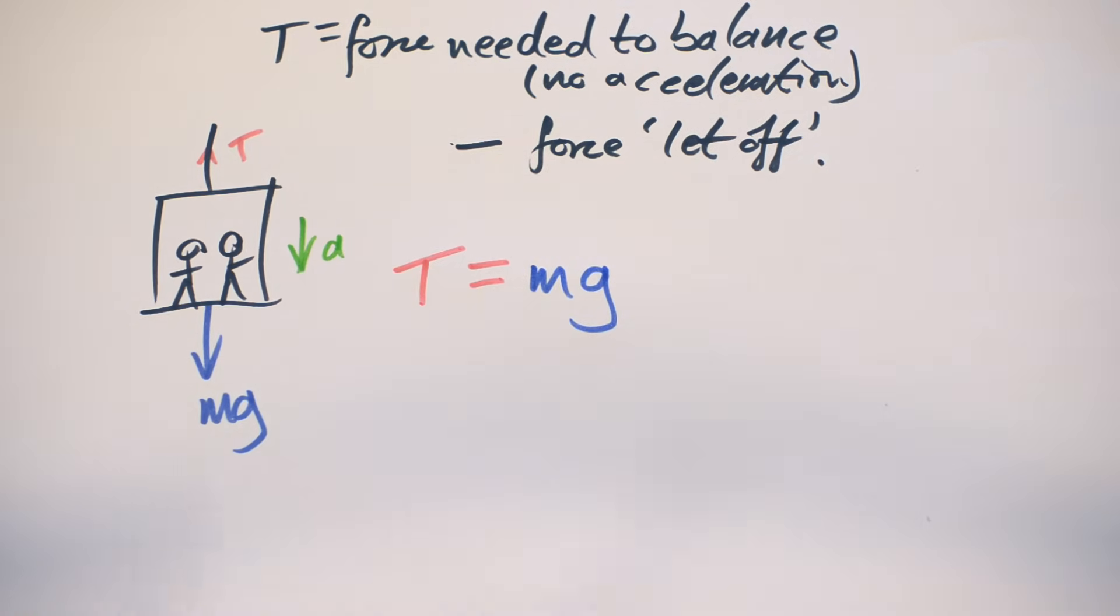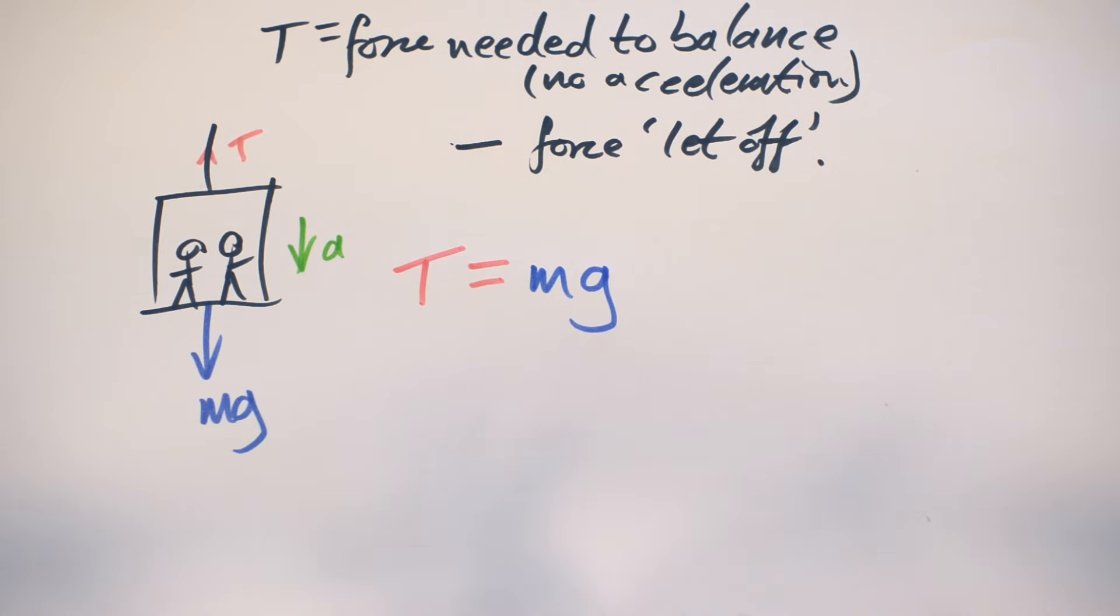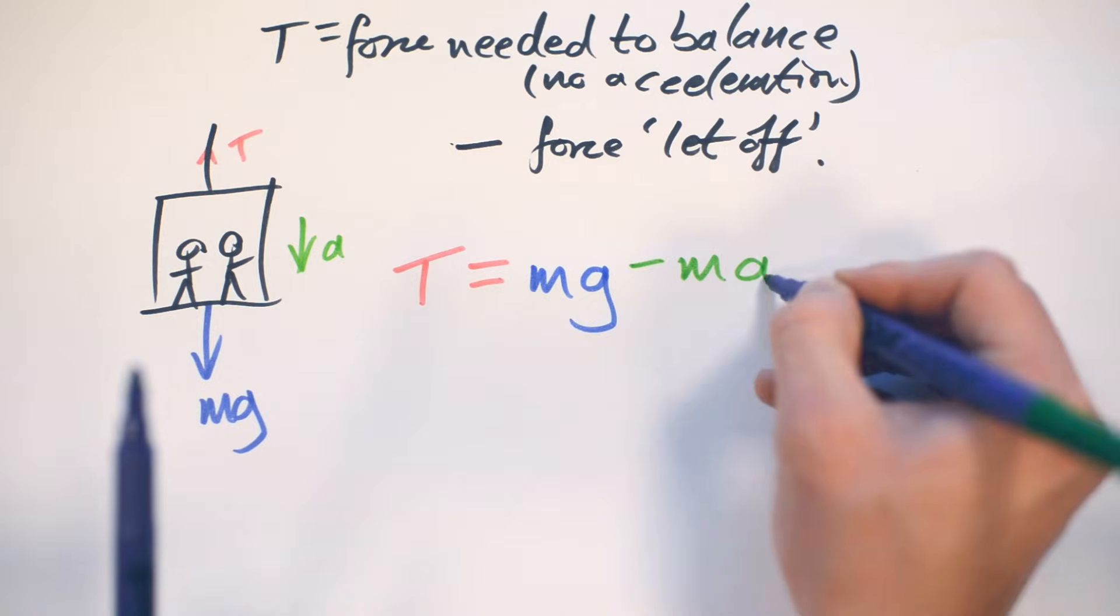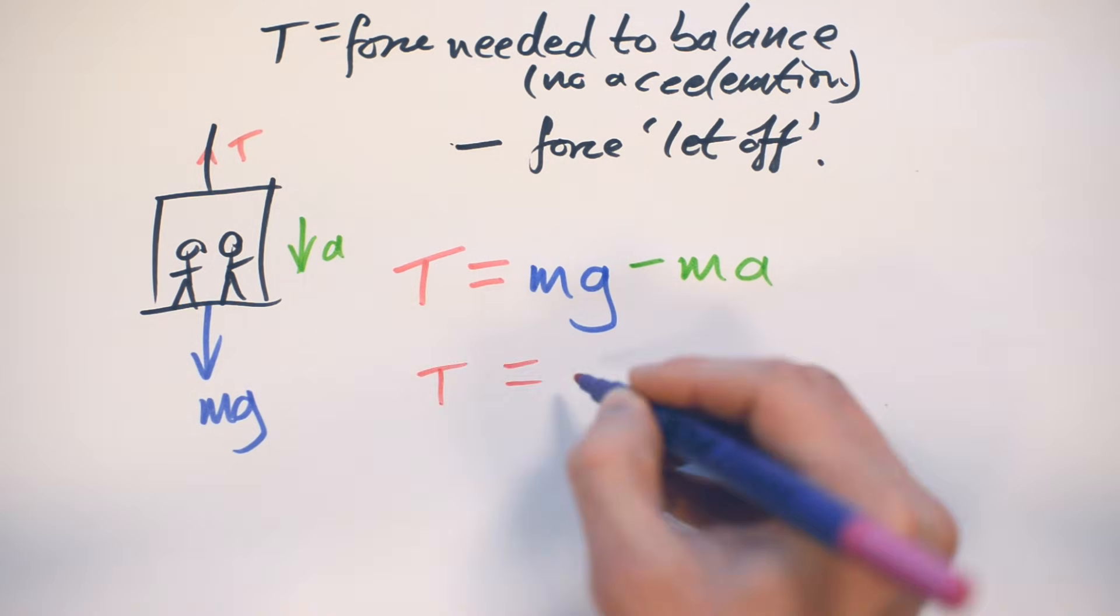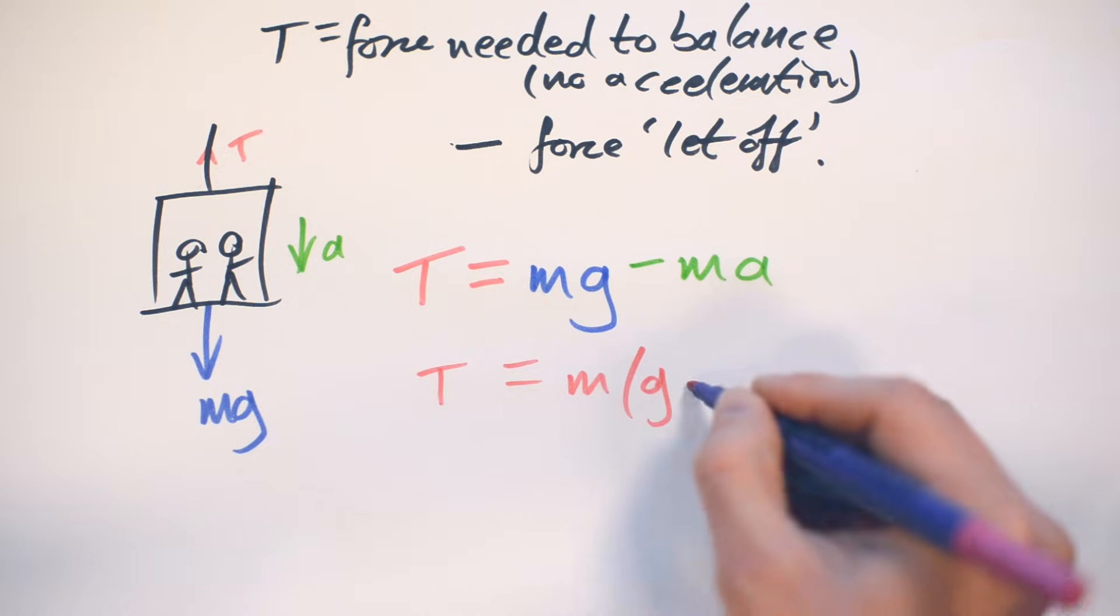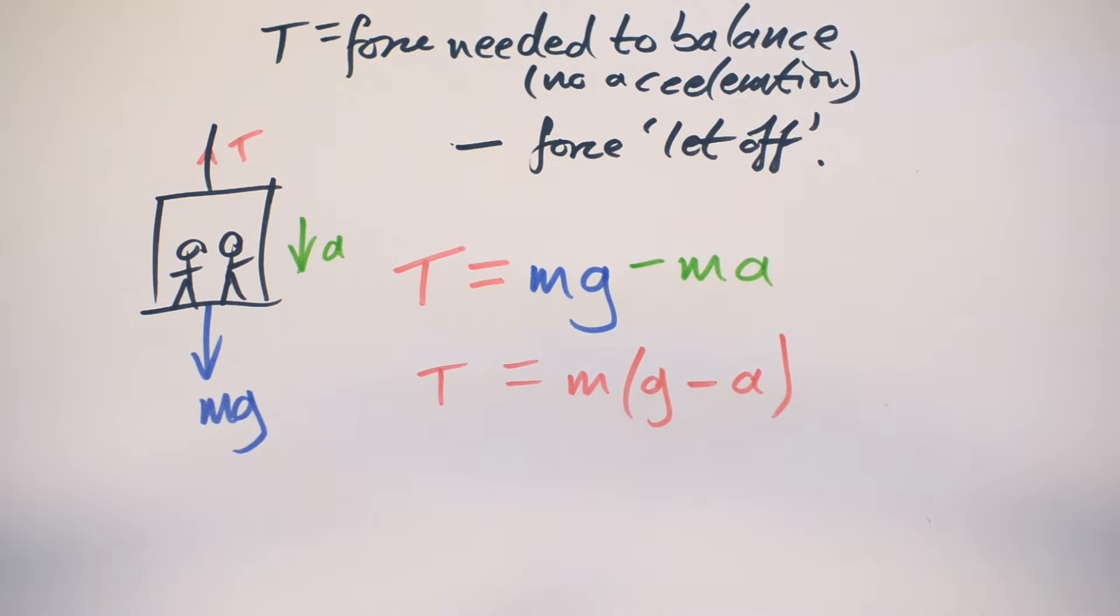But instead of plus Ma in this instance, it's actually going to be, yep, you guessed it, minus Ma, because we're letting off a little bit of force, just to let the lift accelerate downwards a little bit. So, again, we can factorize this, T equals M(g minus a). Simple.